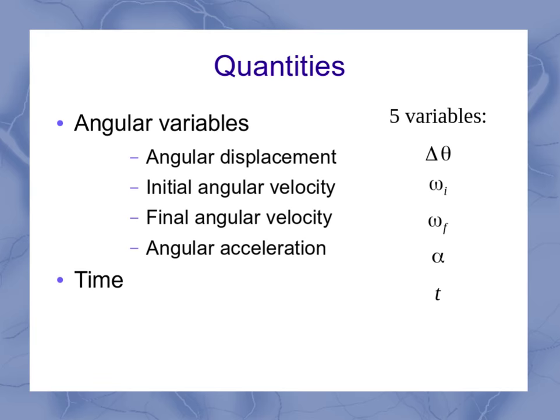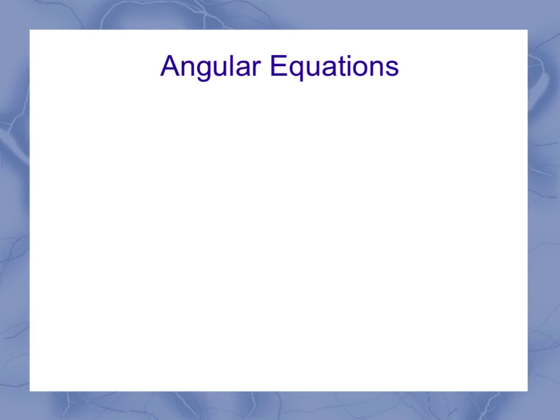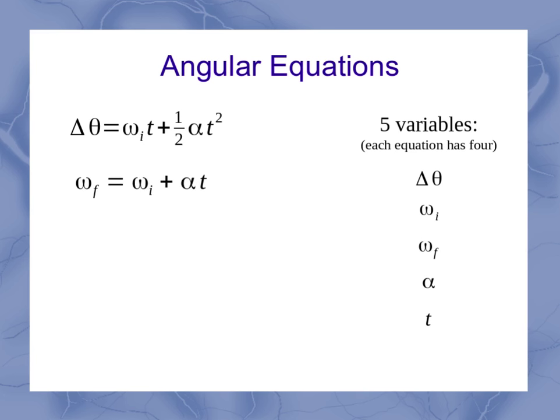So just like our linear equations, we can end up having a set of angular equations where each equation has four of these variables. And the equations are exactly the same as my linear equations, just replacing the linear variables with the angular variables. And time still stays time. So this means we've got a set of equations any time the angular acceleration remains constant.